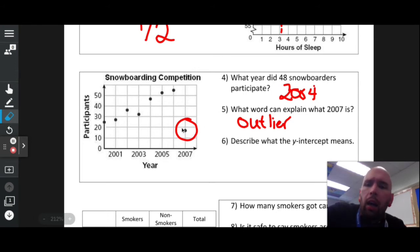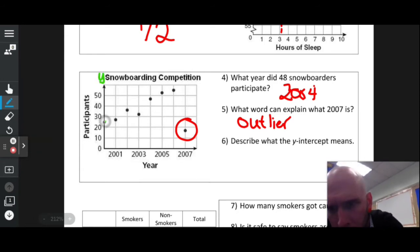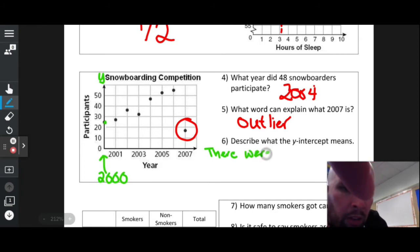What does the y-intercept mean? Well the y-intercept is where my line or in this case my points cross the y-axis. My point is right there on the y-axis, that has to do with the year 2000. The line after that is 2001. At the year 2000 it looks like we had 20 to 30, so right in the middle, 25 participants.